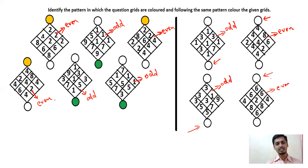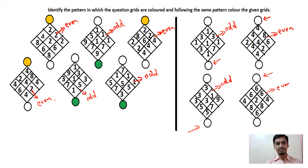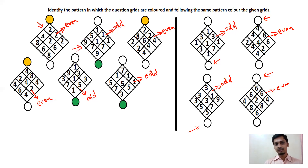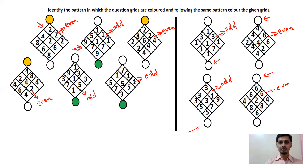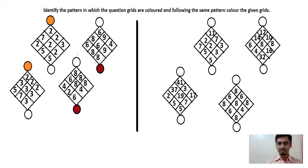Sometimes they will ask questions based on structure — for example, they will give specific numbers. If a box has the number 2, it is colored yellow; if a box has the number 7, it is colored green. So likewise, they will ask questions from structural arrangement also. Now look at the second question — here you have four boxes on the left-hand side as the question and four boxes on the right-hand side as the answer.